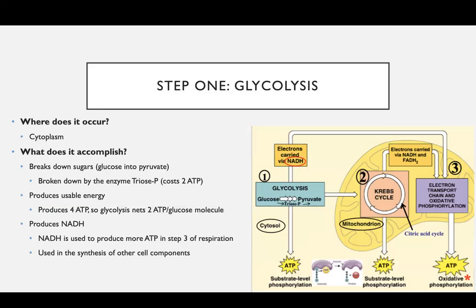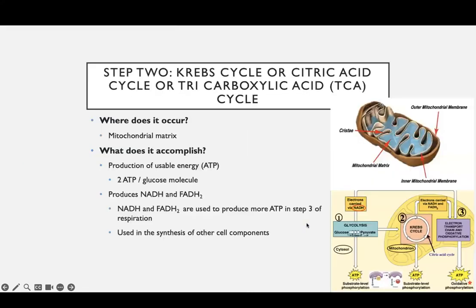So glycolysis, just to review, takes place in the cytoplasm — it's the first step of respiration. Step two is your Krebs cycle, also called the citric acid cycle, or the tricarboxylic acid cycle, or TCA cycle. So it goes by many names.